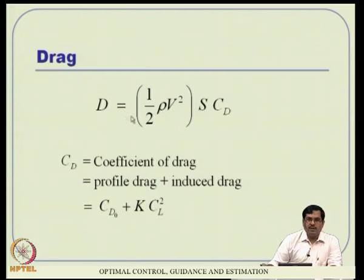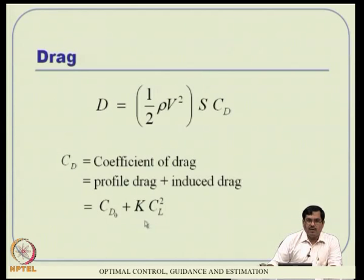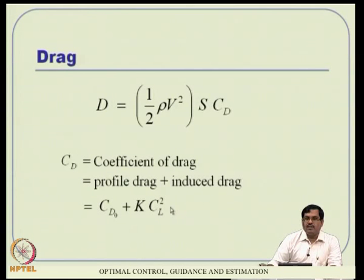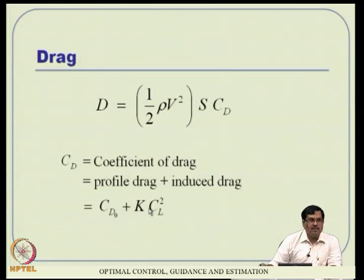Drag is given by a very similar formula: D = Q_bar × S × C_D. C_D is roughly a quadratic function of C_L: C_D = C_D0 + K × C_L squared. So drag varies in a quadratic manner - any amount of lift generated builds up this additional term. Even if C_L is zero, C_D0 ensures drag is still present - drag is invariably there.